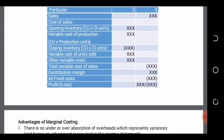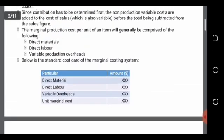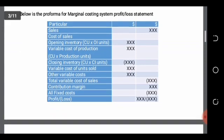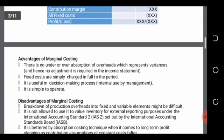To obtain the value of closing inventory, we take the cost per unit times the inventory units. The cost per unit is computed as shown in the standard cost card. The cost of production takes the cost per unit times units of production, and closing inventory takes the cost per unit times units remaining at the end of the period.